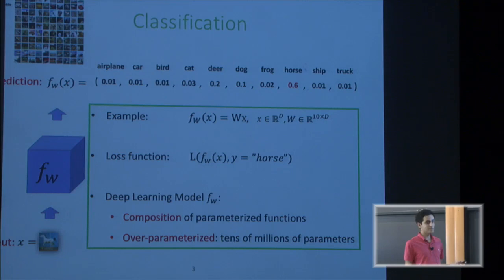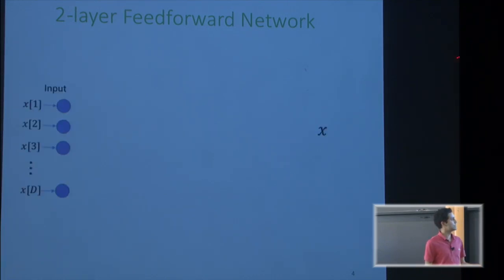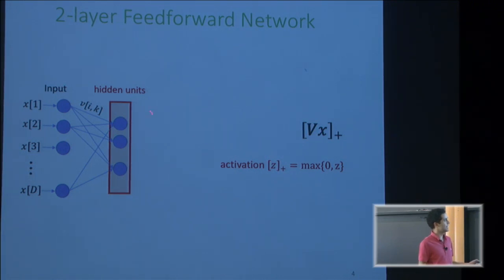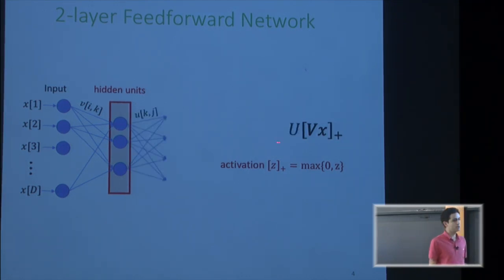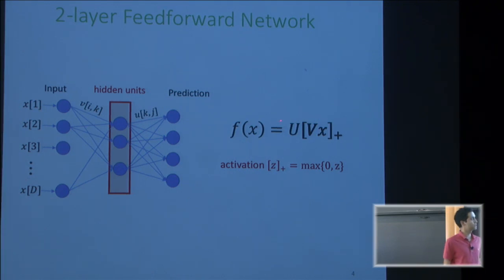The simplest neural network that captures the properties of deep learning models is a two-layer feedforward network. You give input to the network, it multiplies the input by a weight matrix V — everything linear so far — then you zero out the negative values. This gives the output of the hidden units. Then you apply another weight matrix U, and that gives the output of the network. So: first weight, zero out negatives, second weight. This function is non-convex with respect to parameters U and V.